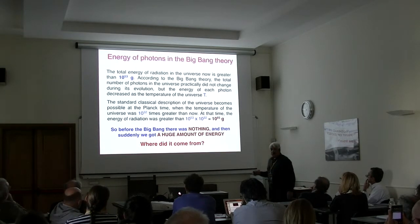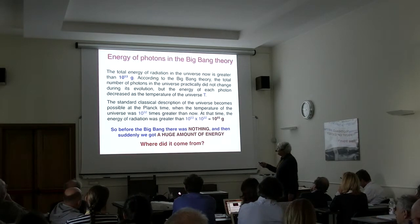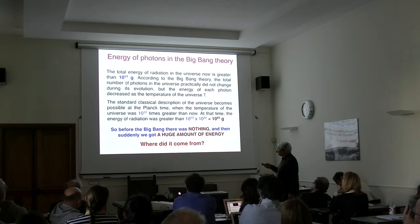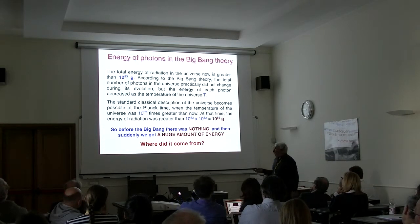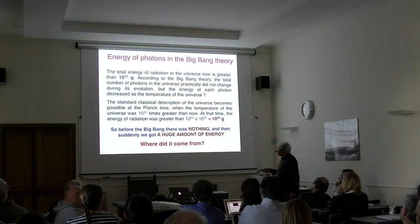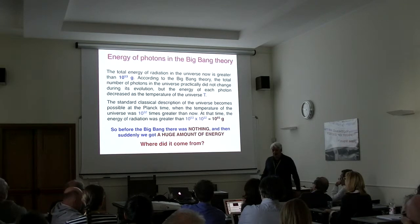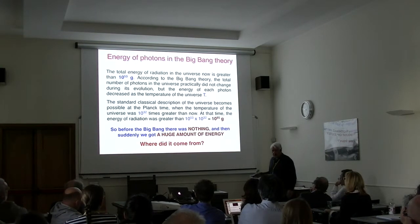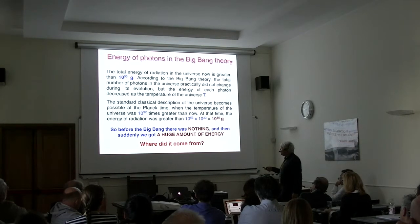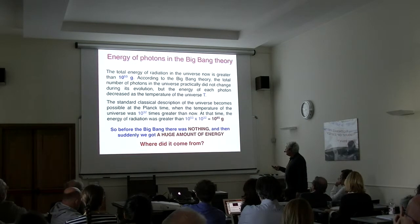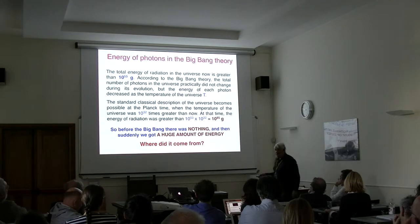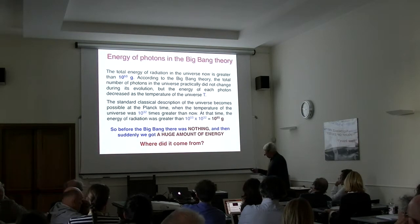If we look at the total energy of radiation right now — ignoring cold dark matter and dark energy — the total energy of all photons in the observable universe is about 10^53 grams. Looking back in time, each photon was adiabatically compressed and had much larger energy by about the Planck time factor, giving a total mass of the universe of about 10^85 grams.